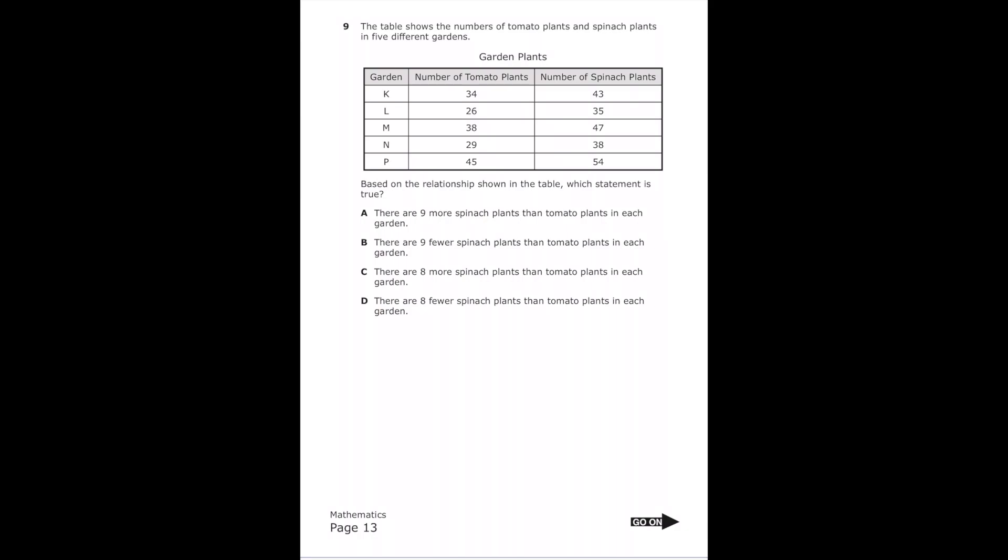So garden K, we have 34 tomato plants and 43 spinach. So that does work out because 34 plus 9 is equal to 43. If we check garden L, 26 plus 9 is equal to 35. 38 plus 9 is equal to 47. So if we just keep doing that down the line, we're going to get plus 9 for each one. So letter A is correct.